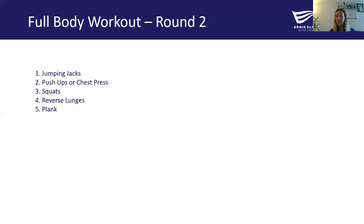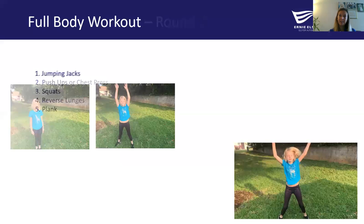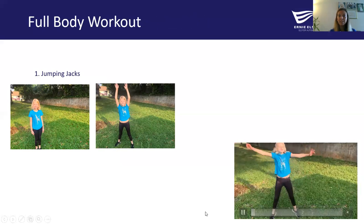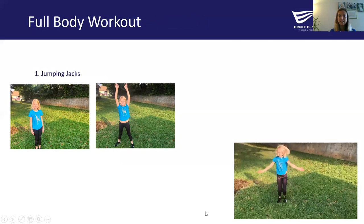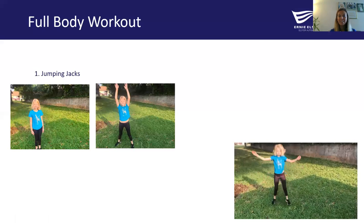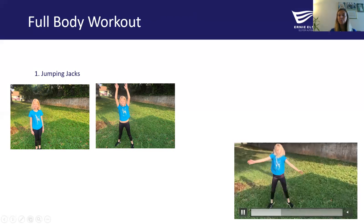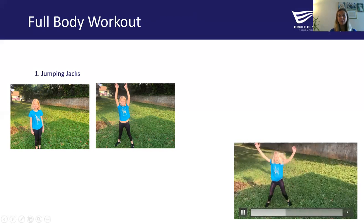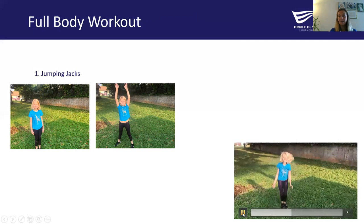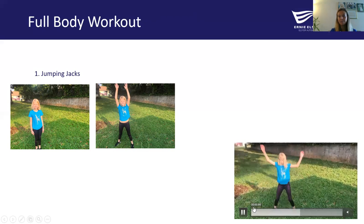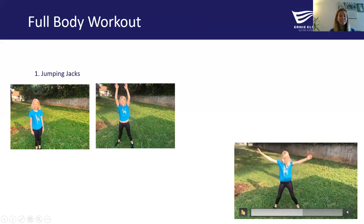We're going to do those same five exercises again for about 30 seconds each, then we'll take another quick break. So again, we have our jumping jacks — this is our cardio piece that's going to help us get our heart rate up. Remember, you can do it either high impact or low impact by stepping out to the side or doing the actual jumping. Pause the video, do your jumping jacks for 30 seconds, and we'll see you when you're done.